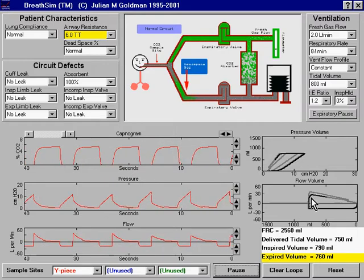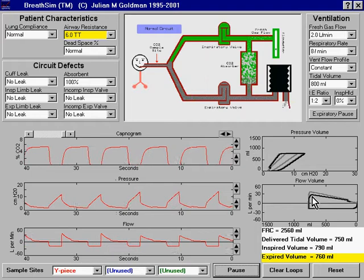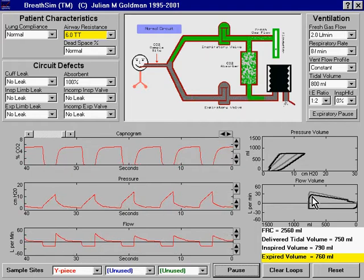We see the same phenomenon represented in the flow volume loop. Here, at the peak expiratory flow position, the loop is a little bit lower. That is, the peak expiratory flow is lower.